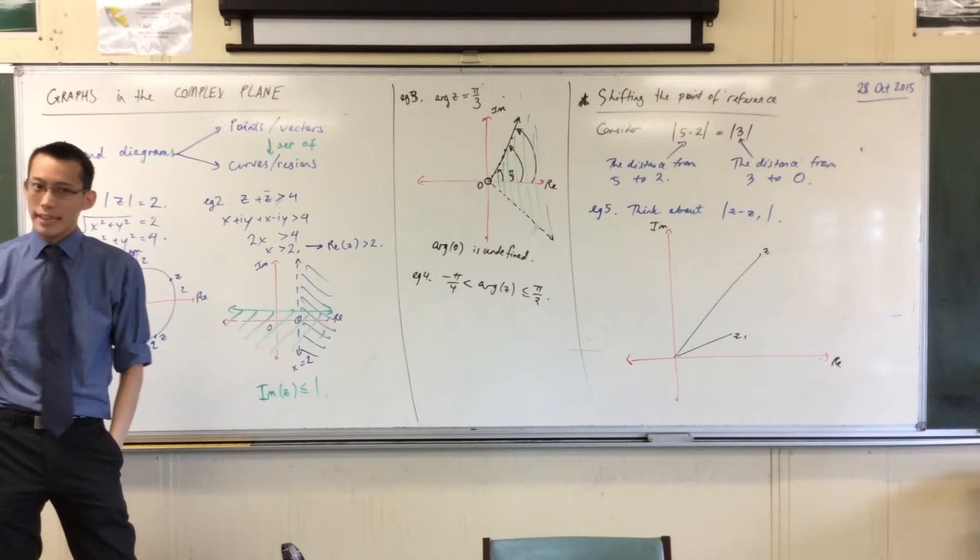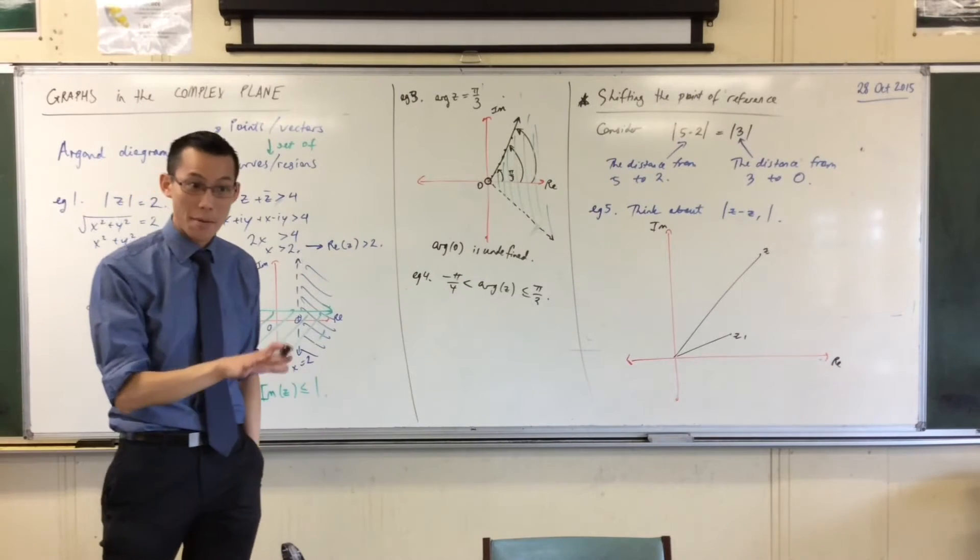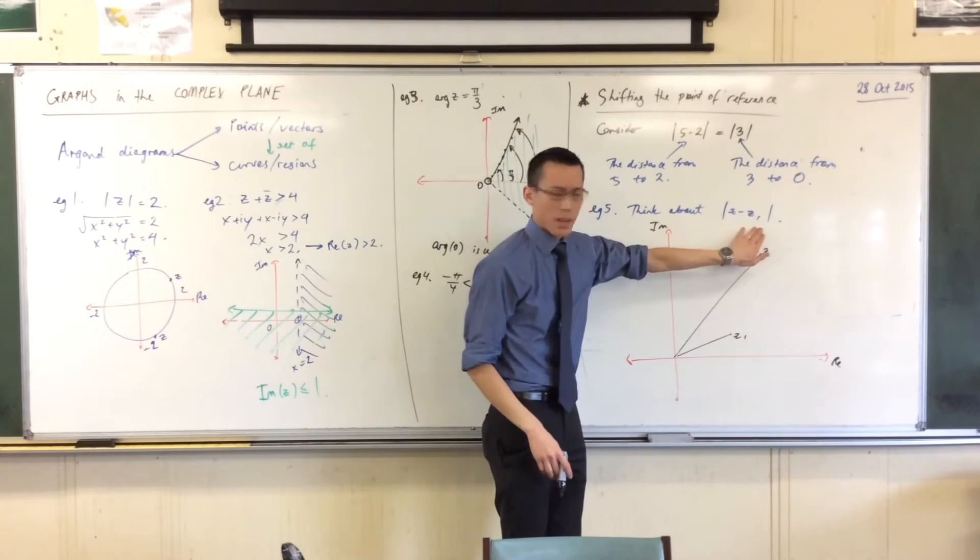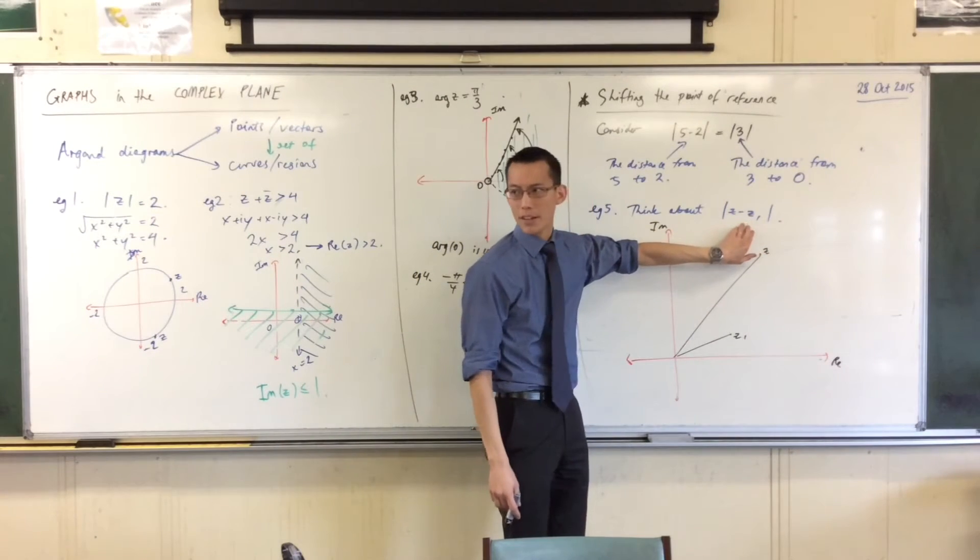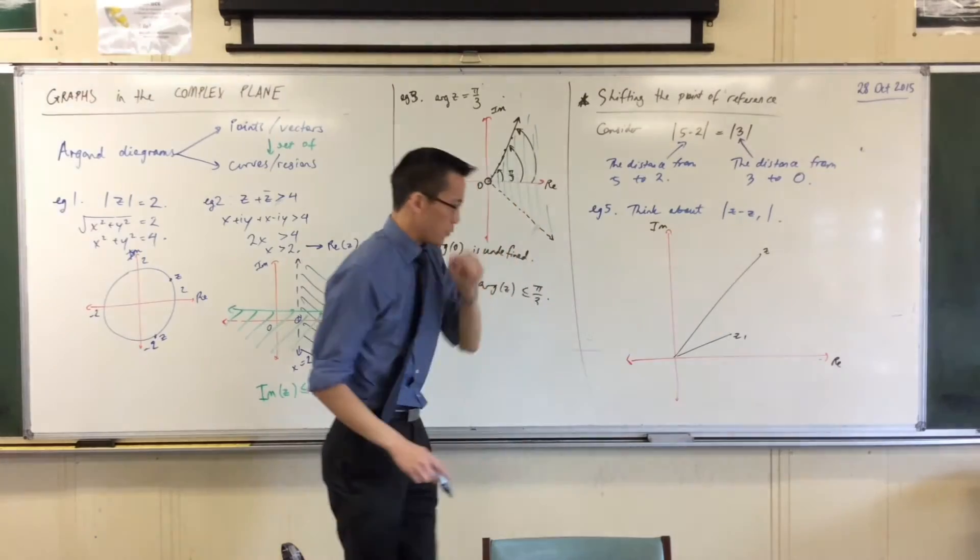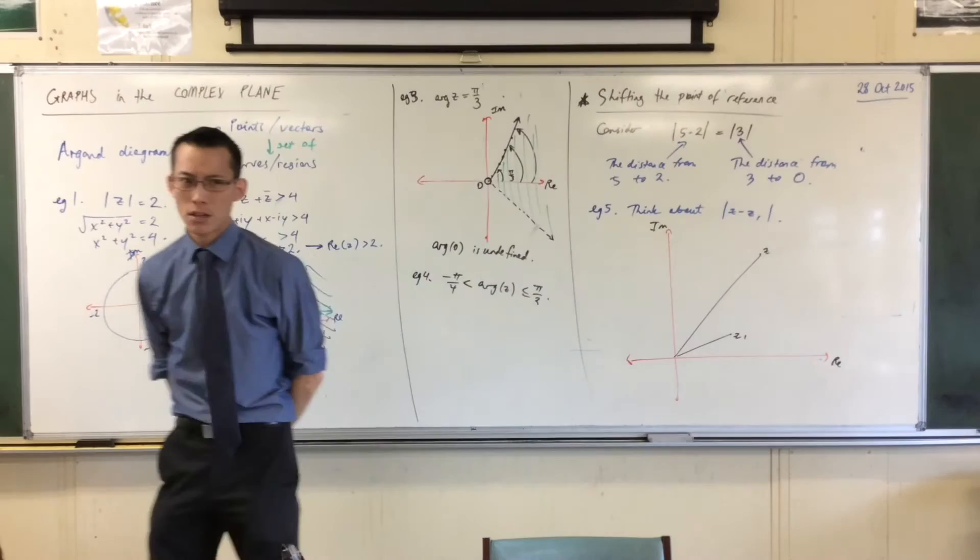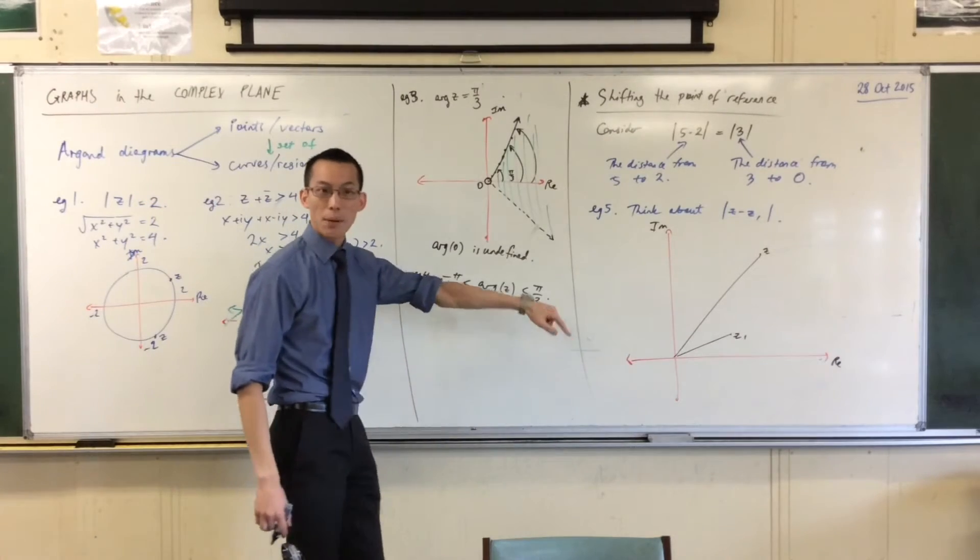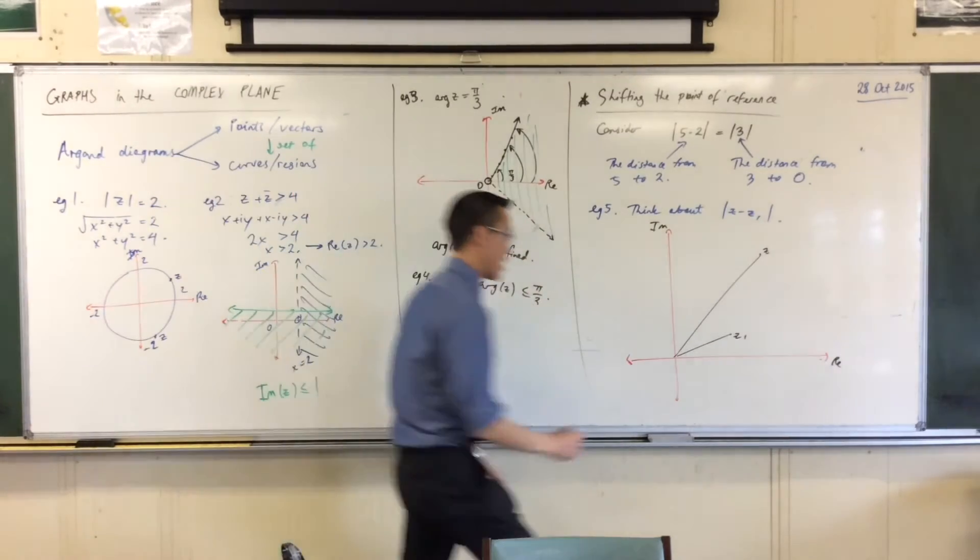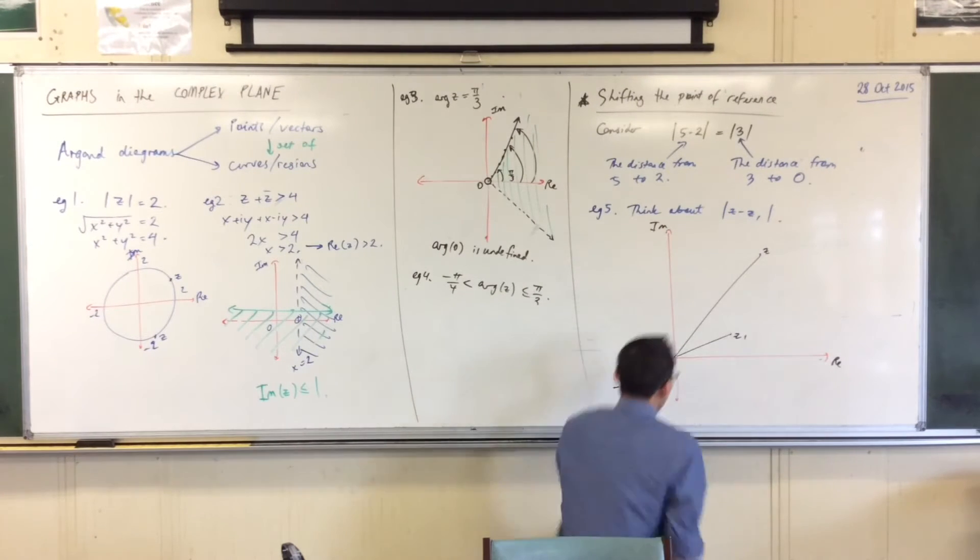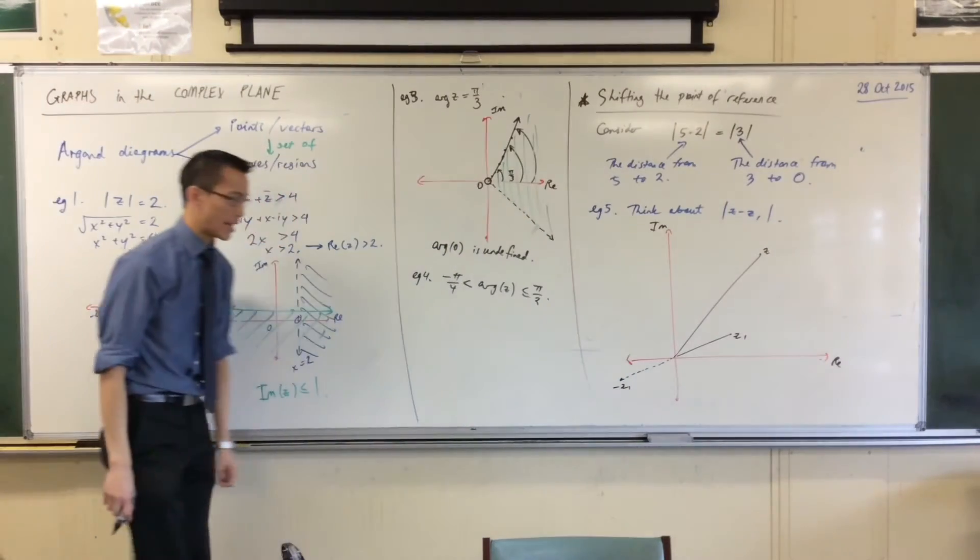A subtraction is the same as adding the negation. Remember that? So, if I want to think about where z minus z1 is, I first want to know where minus z1 is. Think about that. So, if that's where z1 is, where does minus z1 go? It's rotated pi radians around the origin. So, now I'm over here. Roughly speaking, that's where negative z1 is.